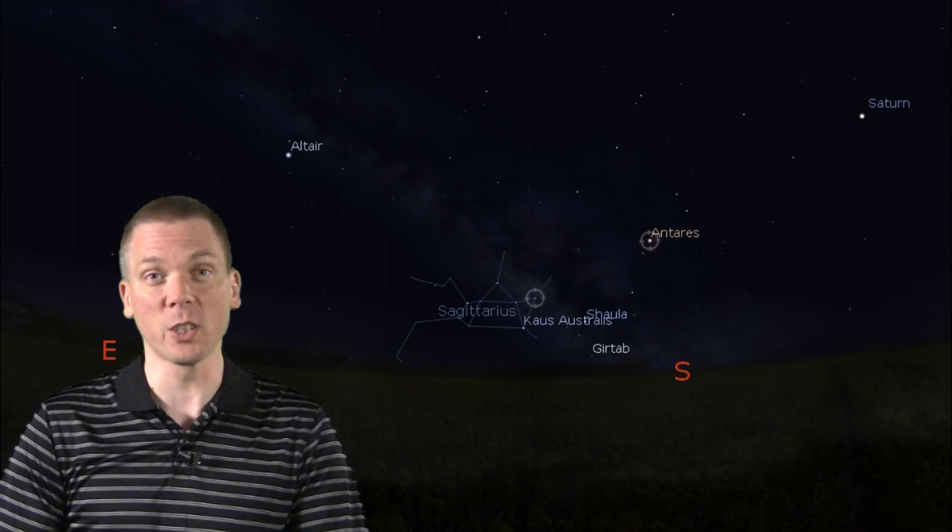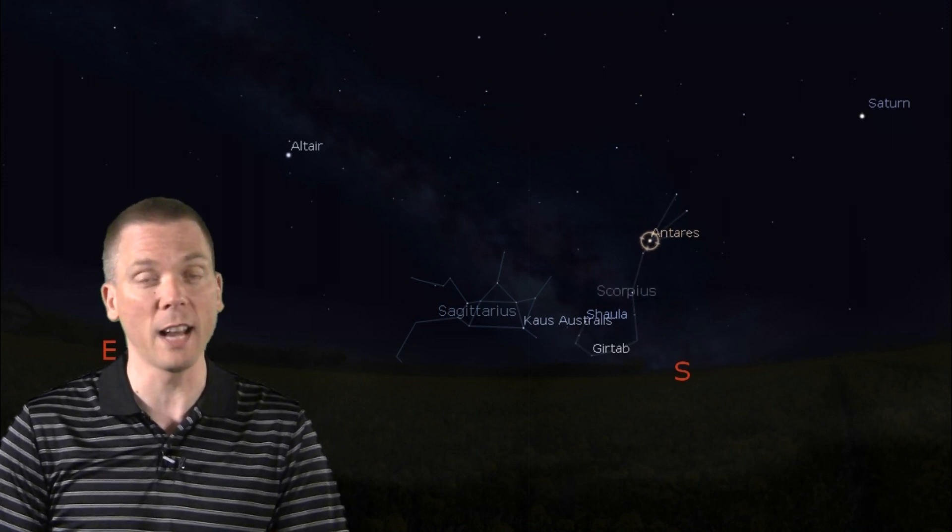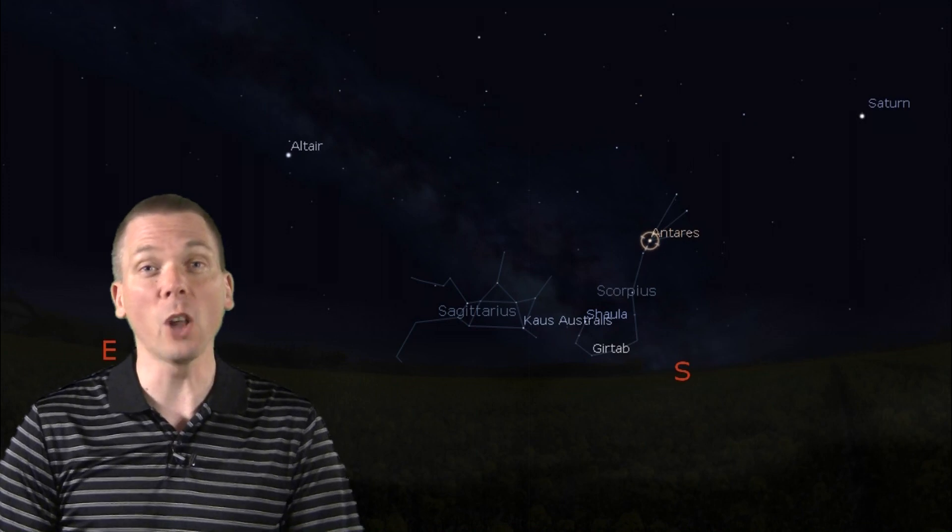To the west of the Archer sits the Scorpion, easily found from the first magnitude and reddish hued Antares. There are several open clusters, globular clusters, and fascinating double stars here as well.